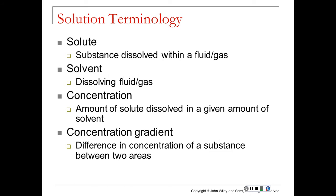The concentration gradient is the difference in concentration between two areas. For instance, if there is a heater in one room and no heater in another room, the room that has the heater has a high concentration of heat and the room without a heater has a low concentration of heat. That's going to cause a concentration gradient, or a difference in concentration of heat.